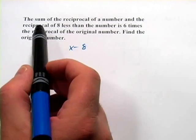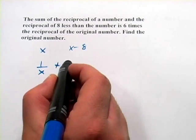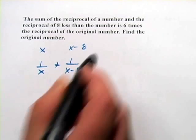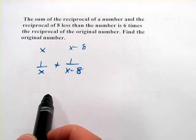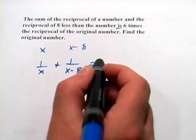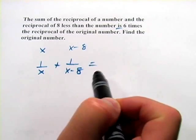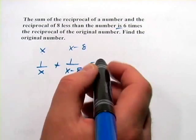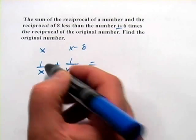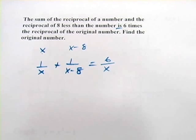So when they say the sum of a reciprocal of a number and the reciprocal of 8 less than the number, that's what we get: 1 over x plus 1 over x minus 8. Then we have is, which is almost always the equal sign in these things, 6 times the reciprocal of the original number. Well, the original number is x, so 6 times the reciprocal is 6 times 1 over x or 6 over x. So that's how to set up the equation.